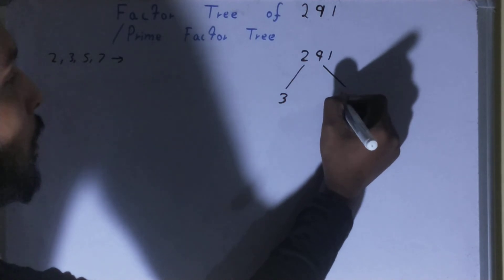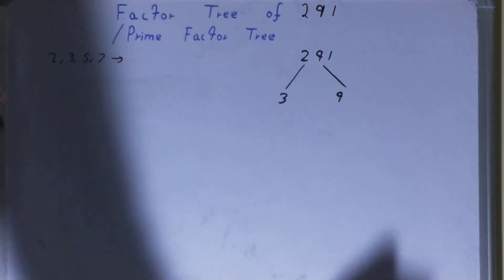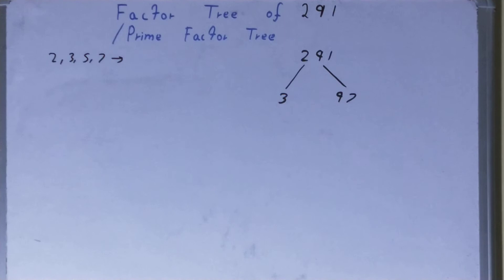we get? We get 97. Now, do we need to factorize this 97? No, because 97 is a prime number. So your work